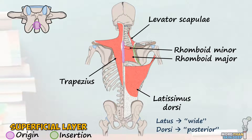The fifth and final superficial back muscle is the levator scapulae. This spindly muscle originates from the transverse processes of C1 to C4 and inserts into the superior angle and medial border of the scapula. Levator scapulae acts to elevate and downwardly rotate the scapula, while also acting a little to move the neck.